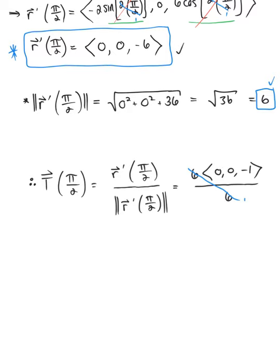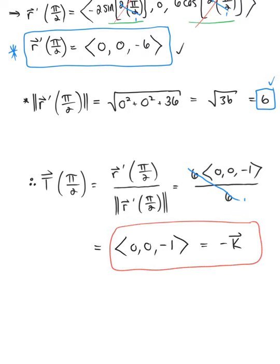And of course, 6 divided by 6 goes to 1, leaving us with the beautiful final answer, the vector ⟨0, 0, -1⟩. Or we could simply go ahead and rewrite this as -k. That's a unit vector pointing in the negative z direction. Our beautiful final answer.